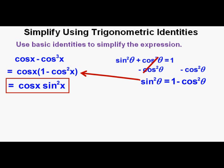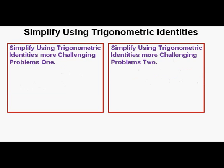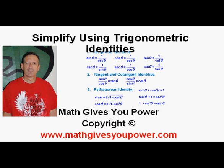With this lesson, we've gone over enough problems to get a good idea of how to start making trigonometric simplifications. I invite the viewer to go to video lessons that work out trigonometric simplifications of greater complexity — Simplify Using Trigonometric Identities More Challenging Problems 1 and More Challenging Problems 2. This has been Simplify Using Trigonometric Identities. Thanks for viewing.